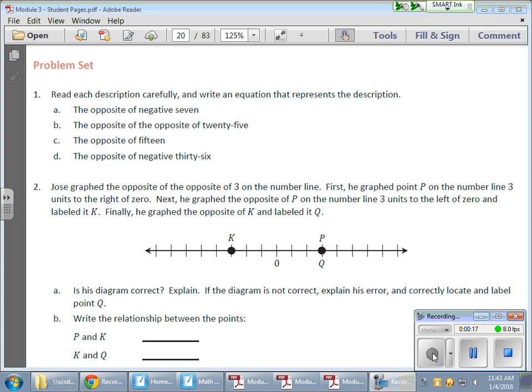In the first area here, we have read each description carefully and write an equation that represents the description. So we have the opposite of a negative 7. Let me show that on a number line quickly. Opposites of a negative 7.